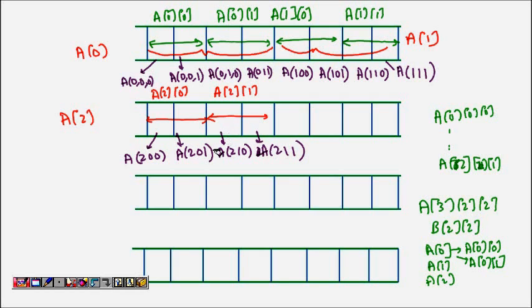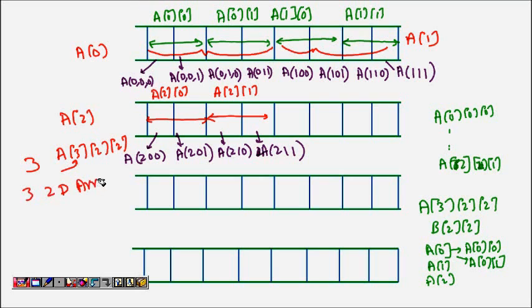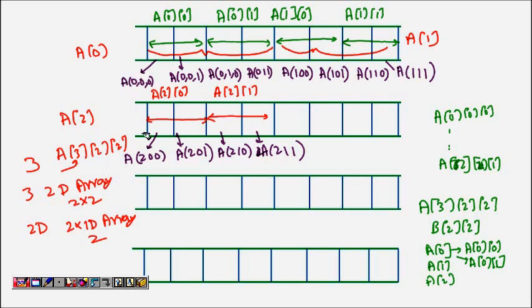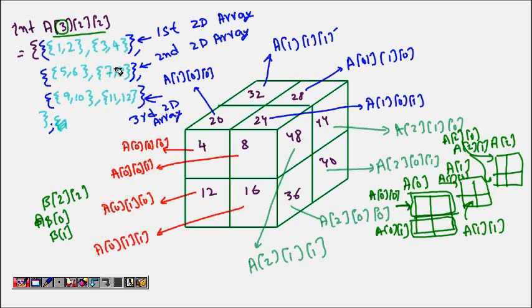Now you should be able to understand how we linearly expand an n-dimensional array. For a[3][2][2]: we know there are three 2D arrays of size 2×2, and each 2D array is again two 1D arrays of size 2. You need to expand and make it linear. If you count all the elements: 1, 2, 3, 4, 5, 6, 7, 8, 9, 10, 11, 12 — these are the 12 array elements stored in memory.